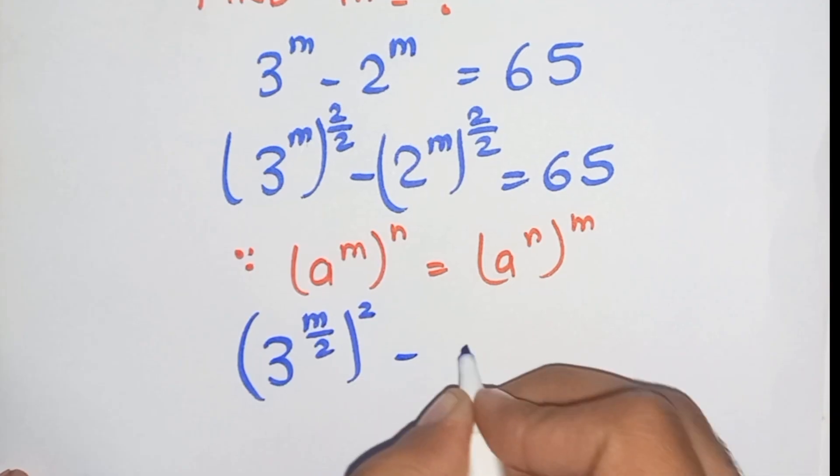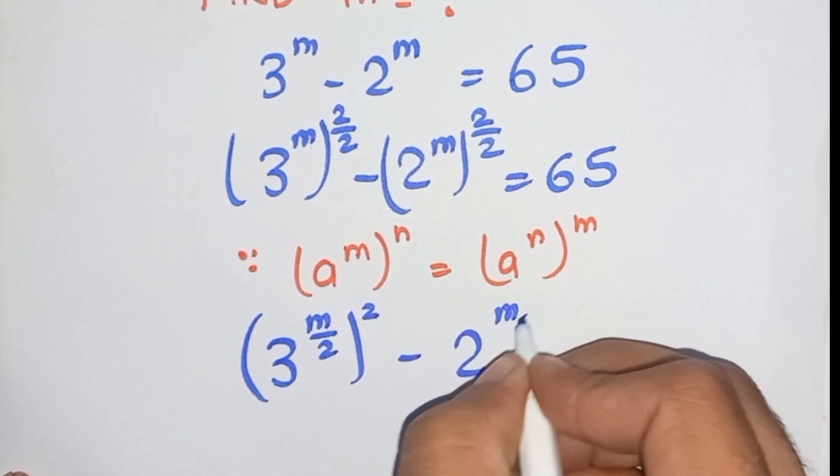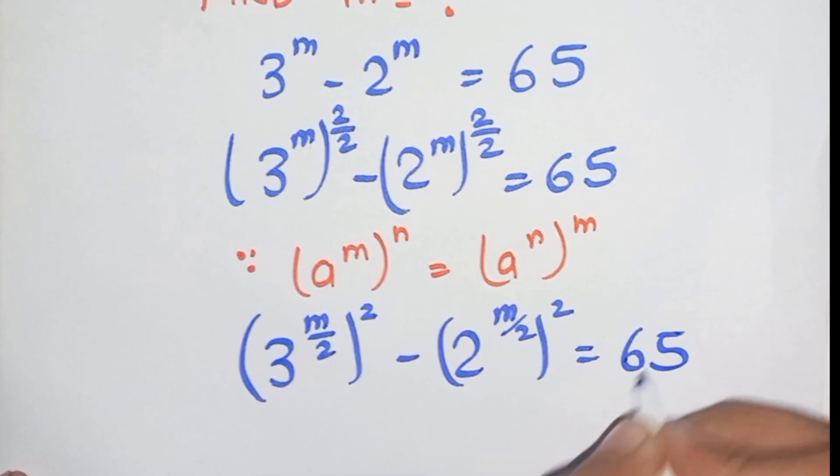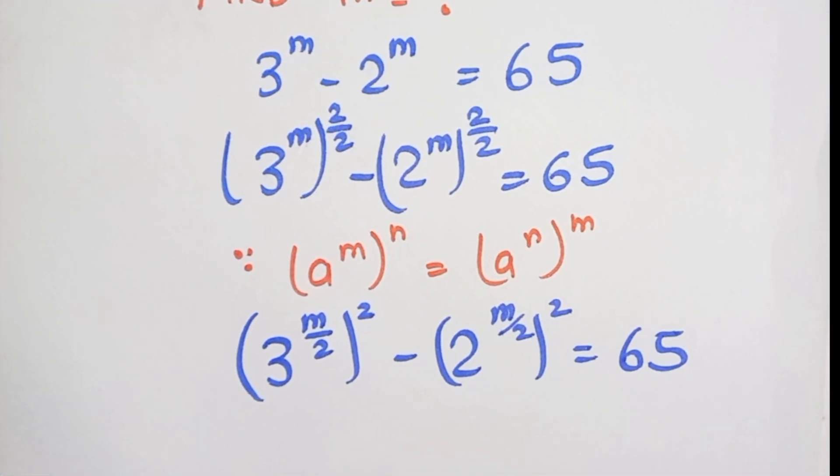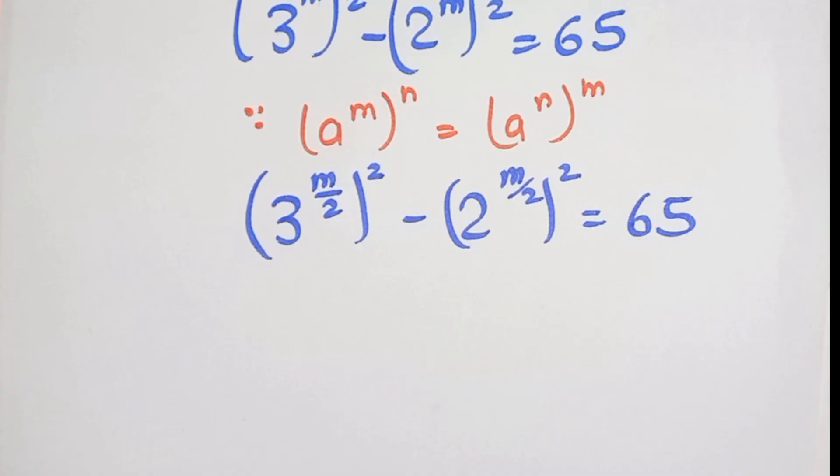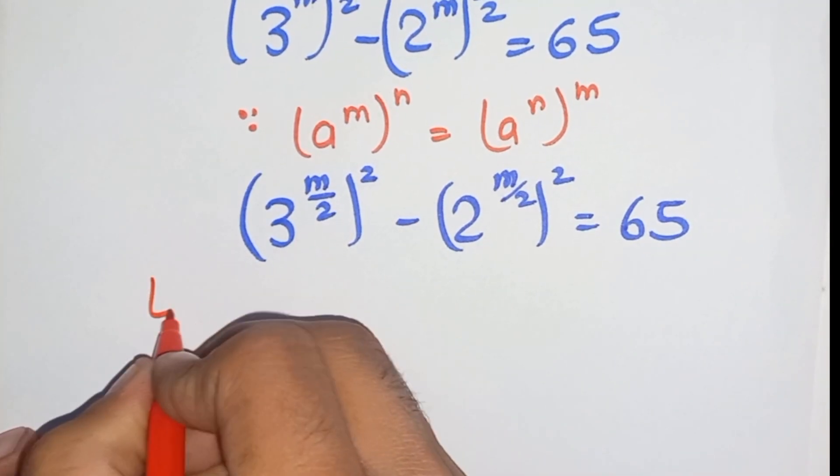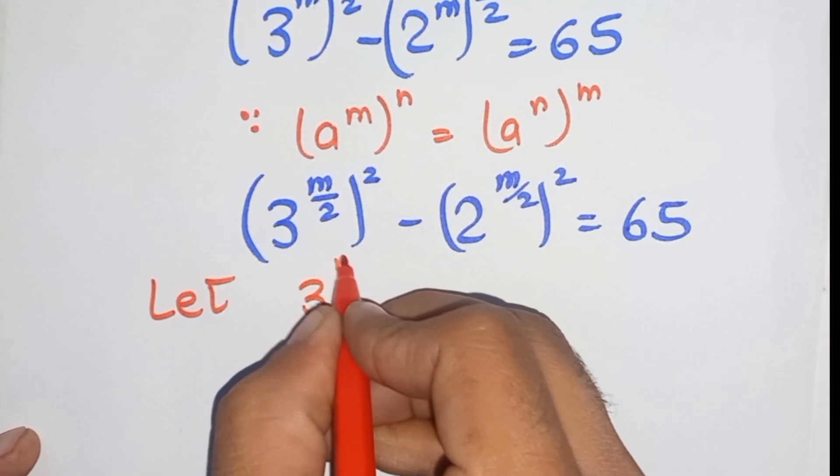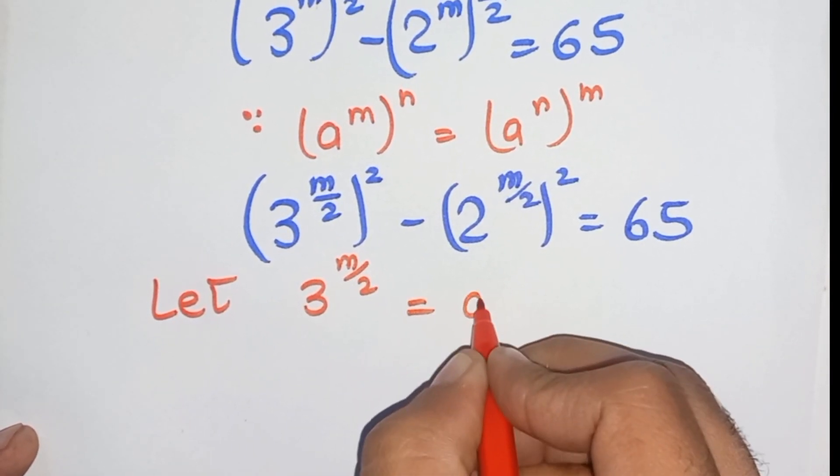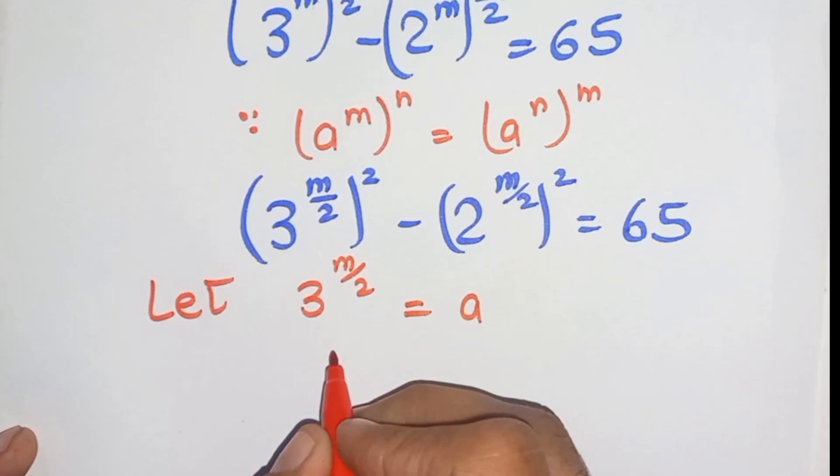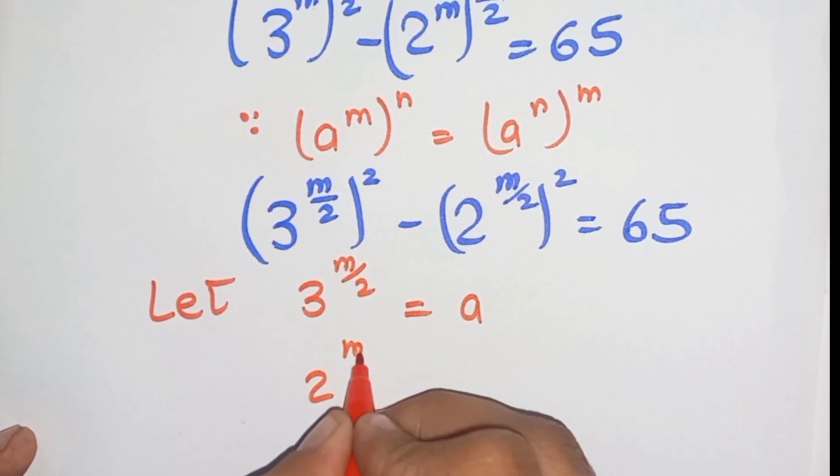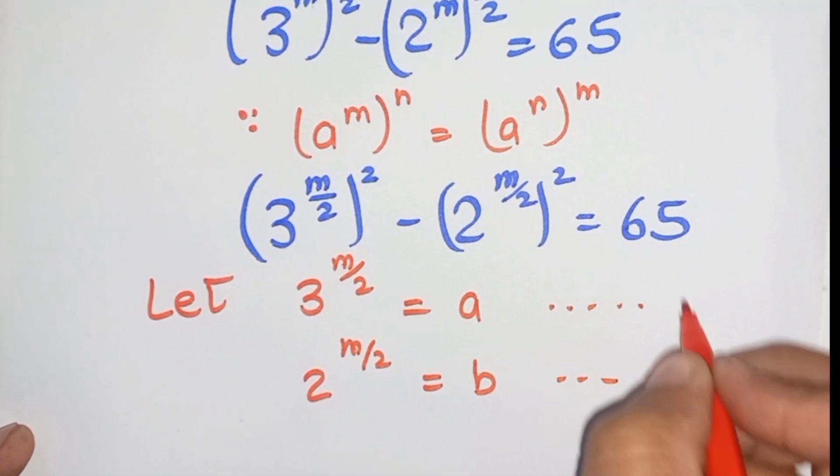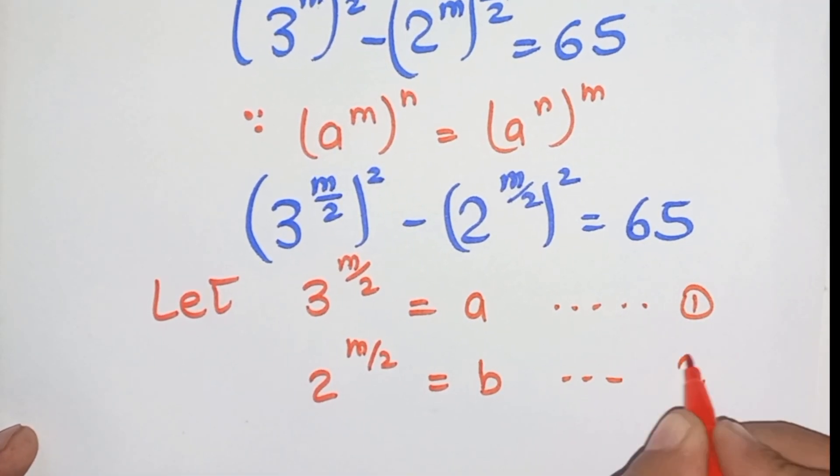Now let the equation, let 3^(m/2) equal a, and 2^(m/2) equal b. So here equation 1 and 2.